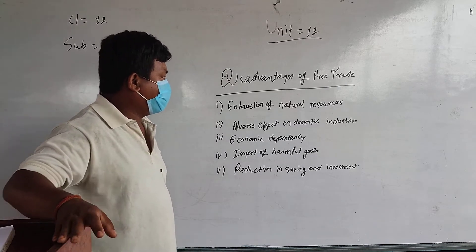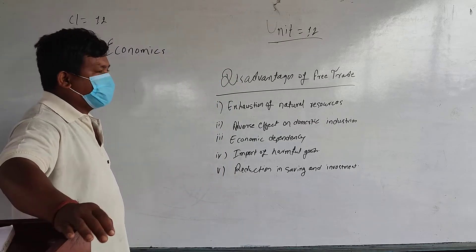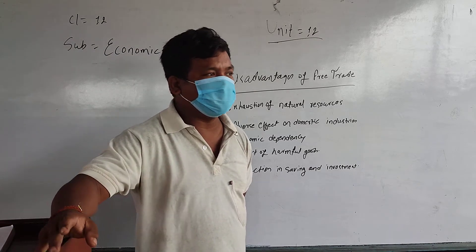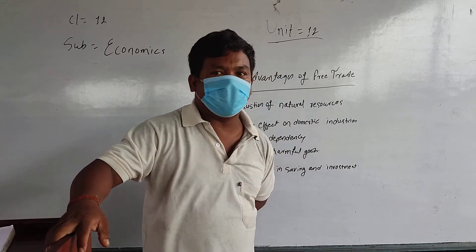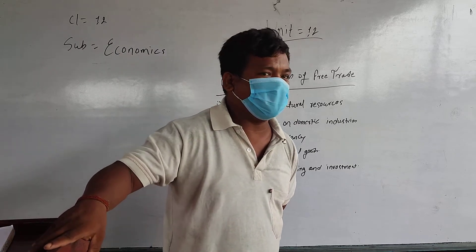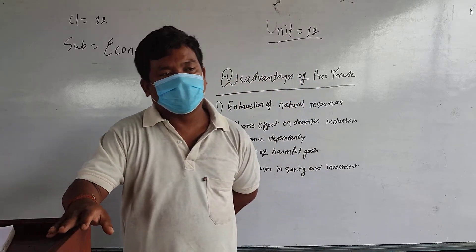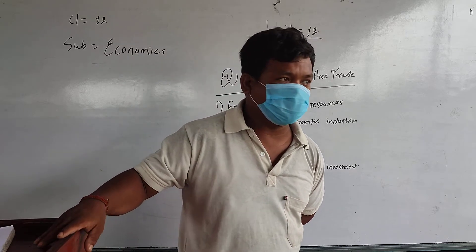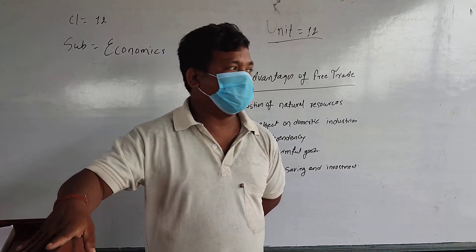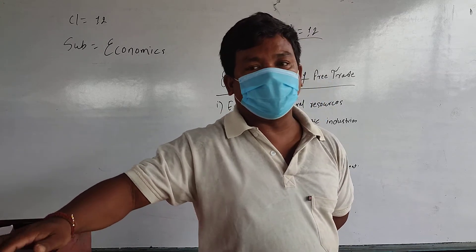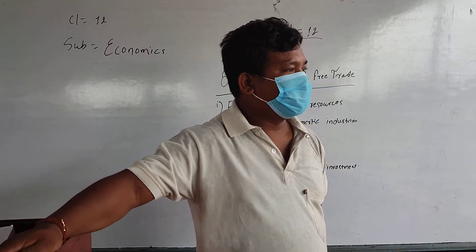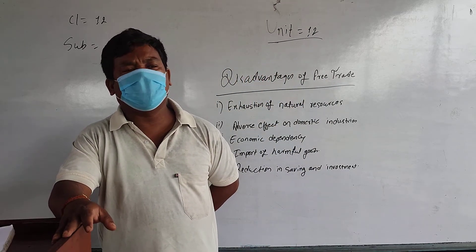Number 1 is Acceleration of Natural Resources. This means that when Free Trade exists, the natural resources of developing countries are utilized by developed countries in the form of raw materials. Because developing countries are not so well industrialized, they don't have major industries, so their natural resources remain unused. In such cases, developed countries take away those resources in the form of minerals and raw materials at a very low price.